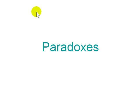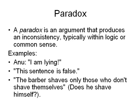This talk is about paradoxes. We looked at logic, ambiguity, and fallacies. Paradoxes are a kind of confusing logic — they are not really true or false but something on the border, almost bordering on philosophy. A paradox is an argument that produces inconsistency, typically within logic or common sense.